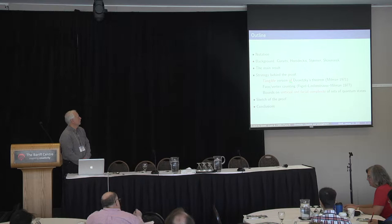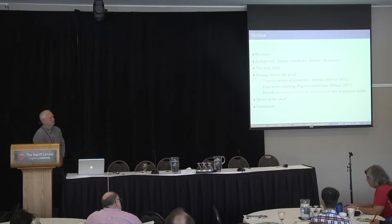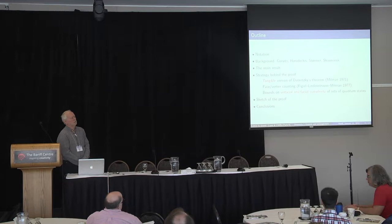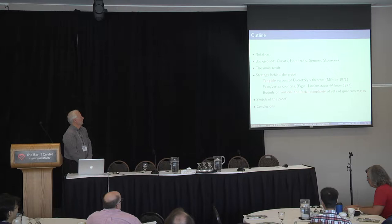The most important tool is the quantitative version of the Dvoretsky theorem, which is due to Milman. That tells you not only that there is a spherical section of your convex body, but it gives you actually much more information about how that section looks.